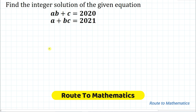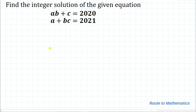Hello everyone, welcome to Root 2 Mathematics. In this video, we are going to solve this interesting competition question. The given question is: find the integer solution of AB plus C equals 2020 and A plus BC equals 2021. We are asked to find the values of A, B, and C.